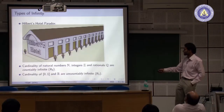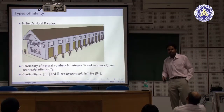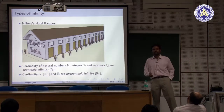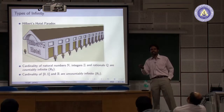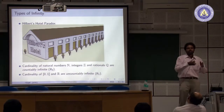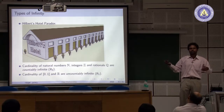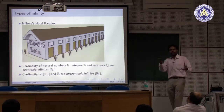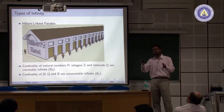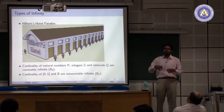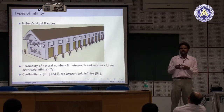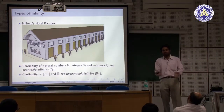To construct the Cantor set: take the interval [0,1] and trisect it. Remove the open middle third (1/3, 2/3) — keeping the endpoints 1/3 and 2/3. At the next stage, take the two remaining intervals, trisect each, and again remove their middle open thirds. Repeat this process infinitely many times. The resulting set has measure zero — its total length is 0 — yet the number of elements in it is as large as the entire real line. A set of length zero but the cardinality of ℝ.